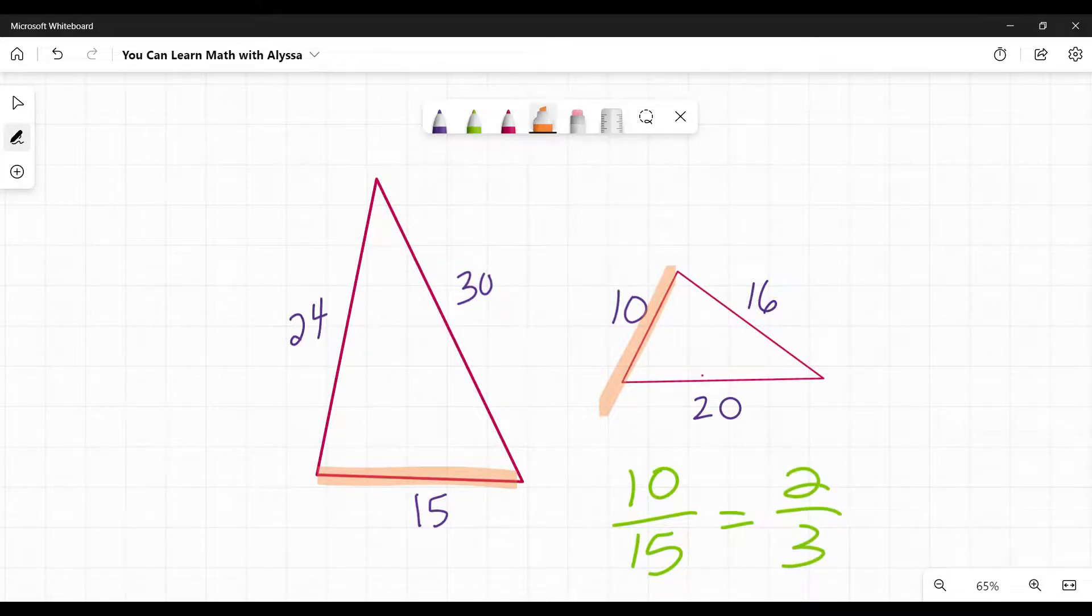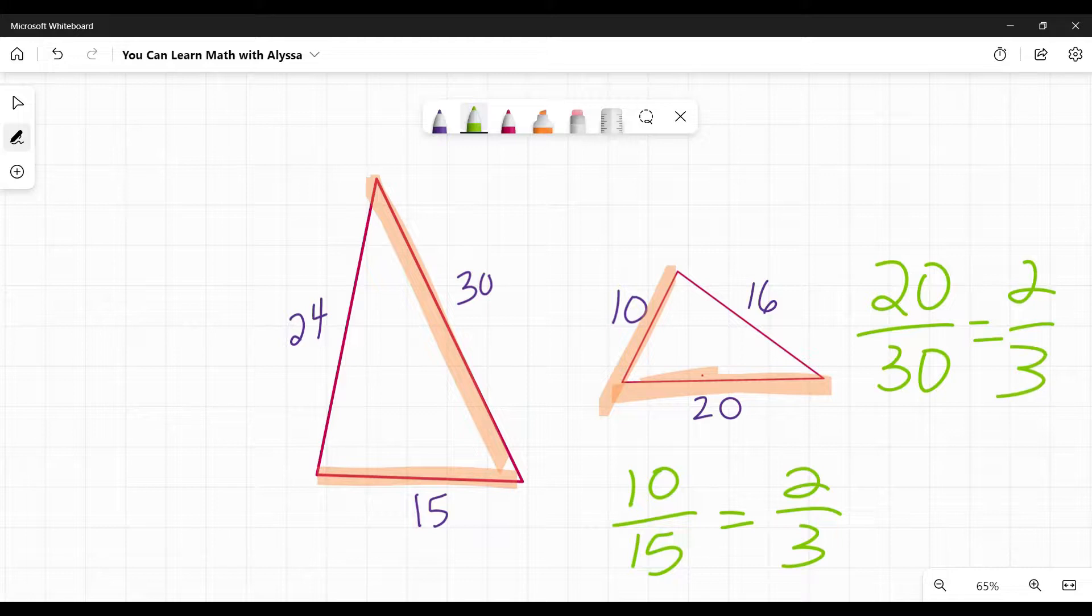The next side I'm going to pick is the longest. Going by the numbers, 30 is the longest on that one, 20 is the longest on that one. The ratio of small triangle side to big triangle side is 20 to 30. Again, that simplifies to 2 thirds. Looking good. Let's check the last one.